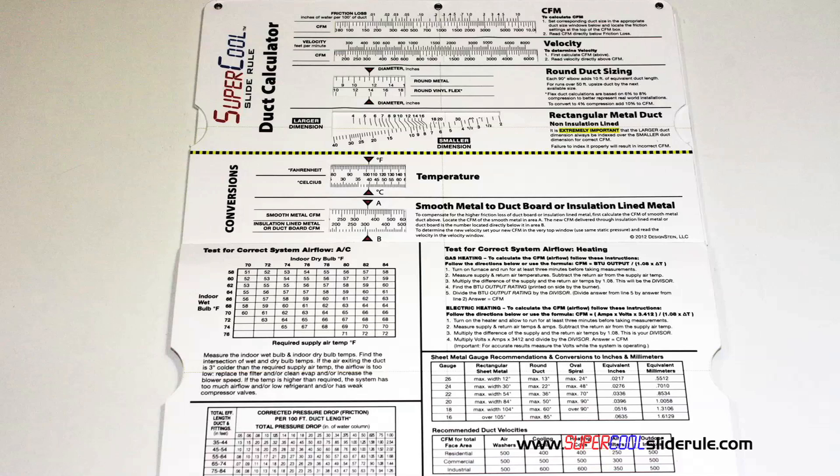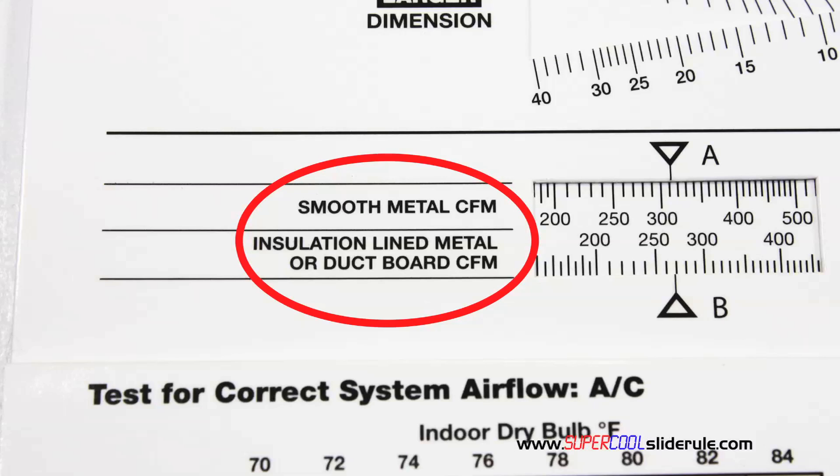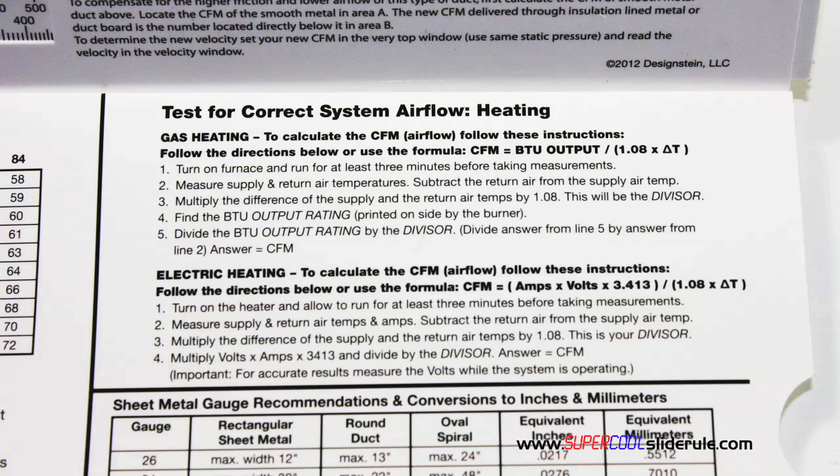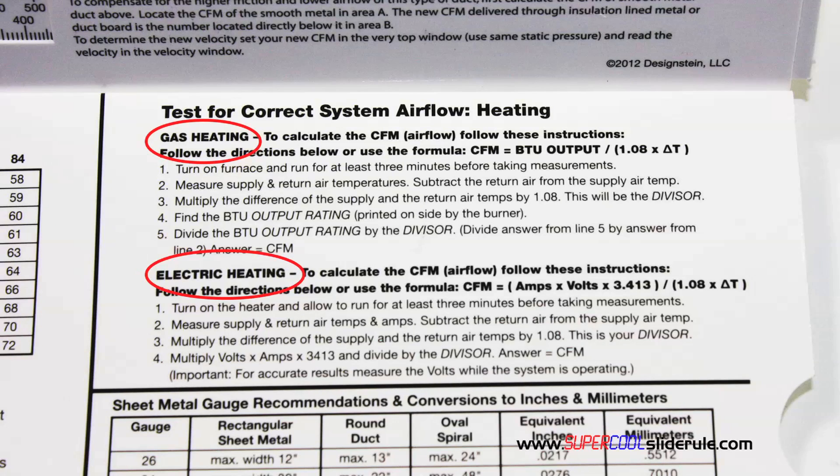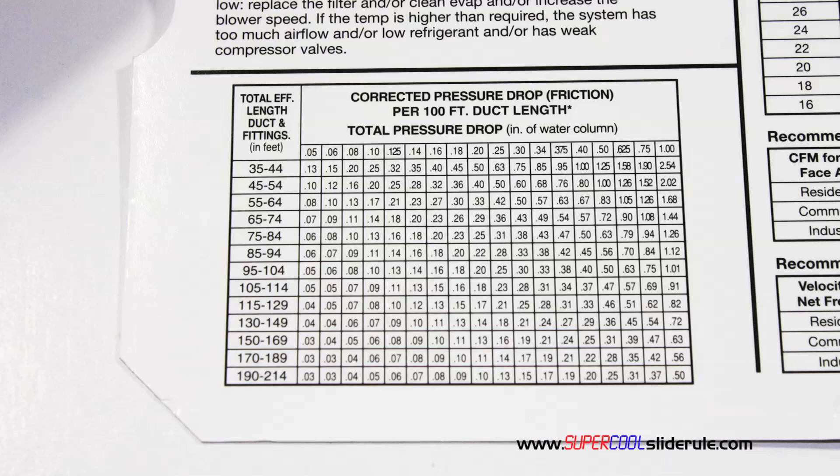Inside is packed with even more information. It performs sizing of both metal and flexible duct. It has the only direct reading conversion from smooth metal to insulation line metal we've ever seen. The majority of technicians have never been taught that if the insulation is on the inside of the ductwork you cannot size it with a regular duct calculator. It has step-by-step directions for determining airflow through a gas furnace, electric furnace, or an air conditioning unit.